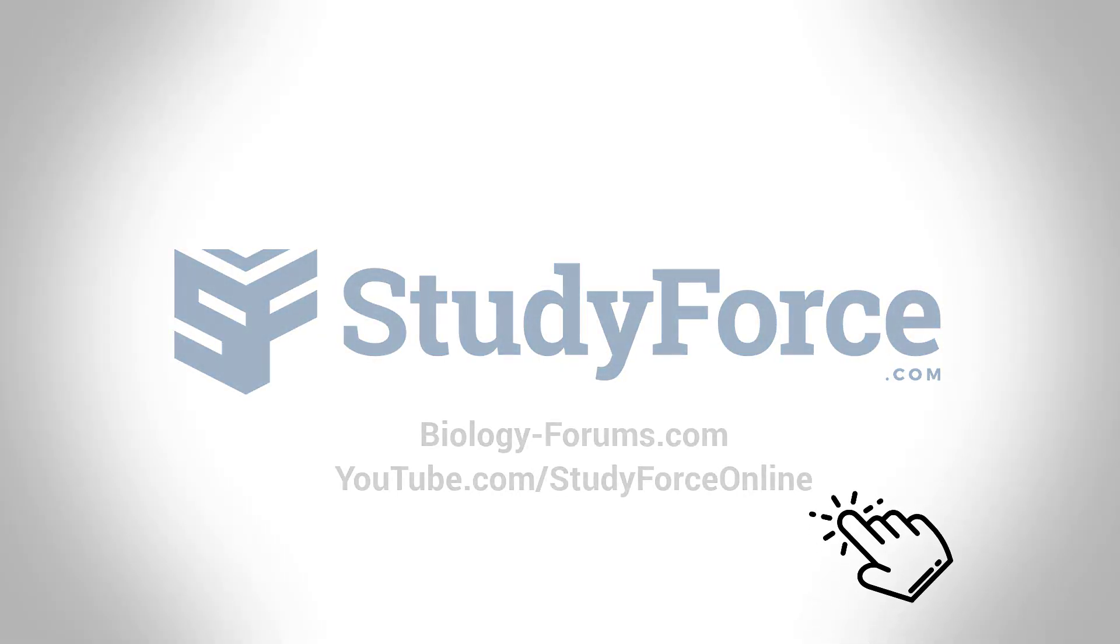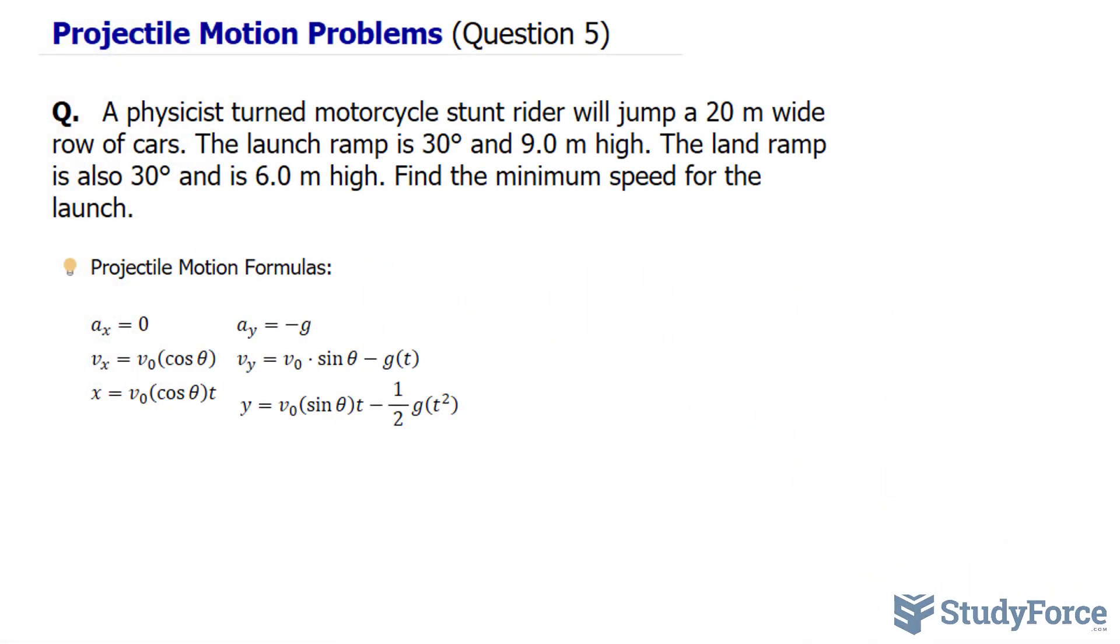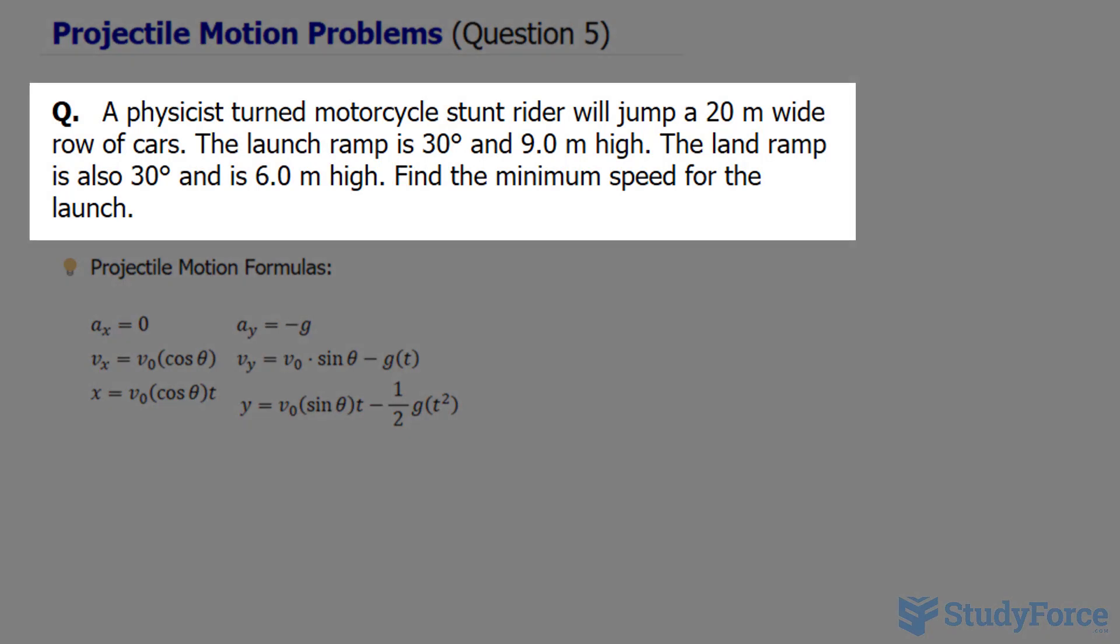Welcome back to question 5 of our projectile motion problems. The question reads: a physicist turned motorcycle stunt rider will jump a 20 meter wide row of cars. The launch ramp is 30 degrees and 9 meters high. The land ramp is also 30 degrees and is 6 meters high. Find the minimum speed for the launch.